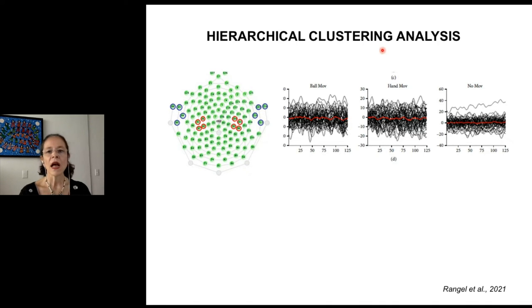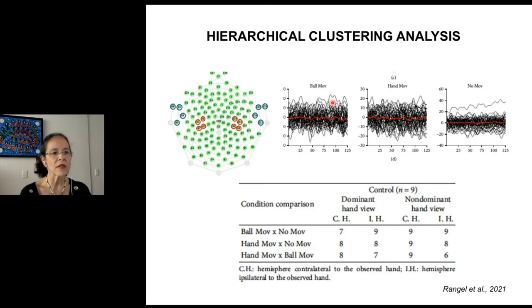These comparisons allowed to identify statistical difference across EEG segments per participant in the sensory motor cortex, contralateral and ipsilateral to the observed hand. For instance, this statistical approach showed that it was possible to discriminate between ball movement versus no movement in the contralateral sensory motor cortex in seven out of the nine participants, when they viewed videos depicting images of the dominant hand.